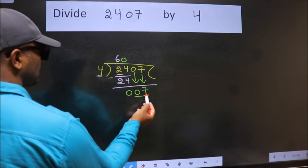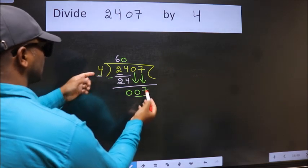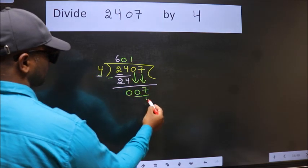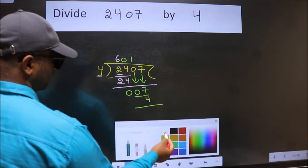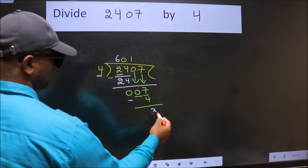A number close to 7 in 4 table is 4 times 1 equals 4. Now we subtract. We get 3.